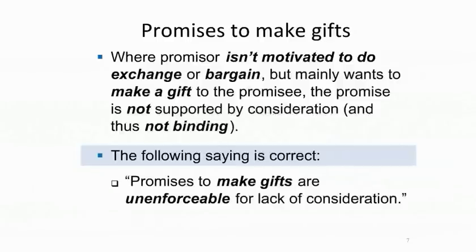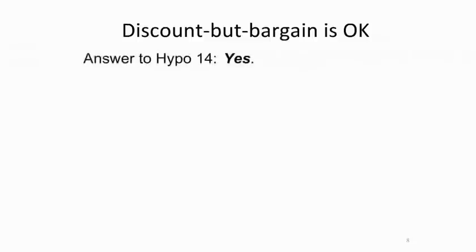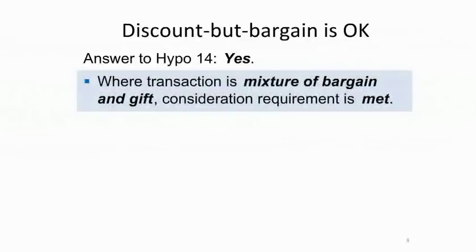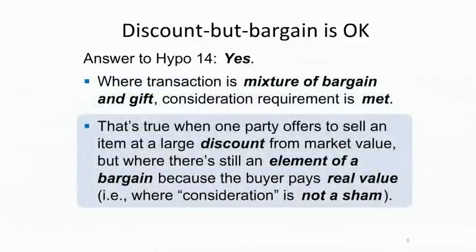However, because the multistate examiners know you'll probably remember this rule, they will rarely give you a fact pattern resolved simply by observing that the promisor's promise is a gift and thus unenforceable. The promise to make a gift issue will be more disguised. Going back to Hypo 14 — you might contend that when Uncle promises to sell Nephew a car worth $50,000 for $10,000, Uncle is really promising to make a gift of $40,000 and that promise should be unenforceable. But that's not the rule. If a transaction is a mixture of a bargain and a gift, the consideration requirement is deemed satisfied.